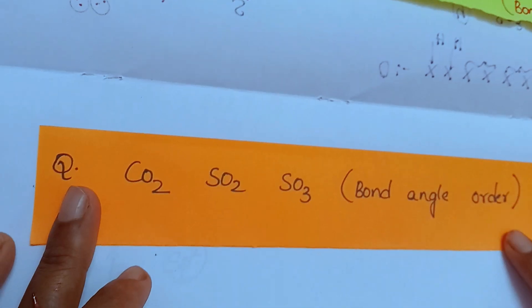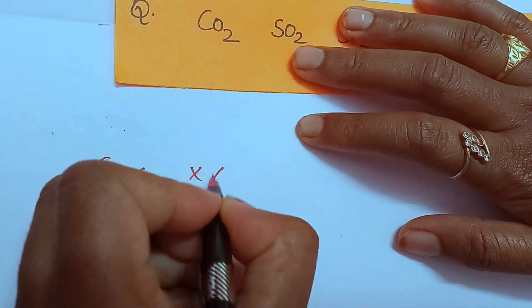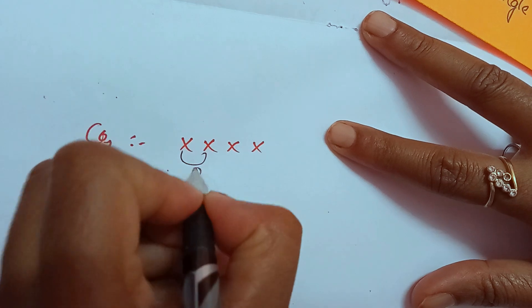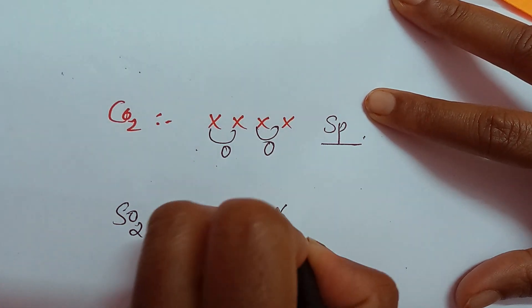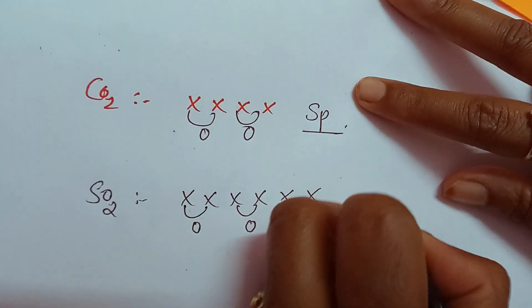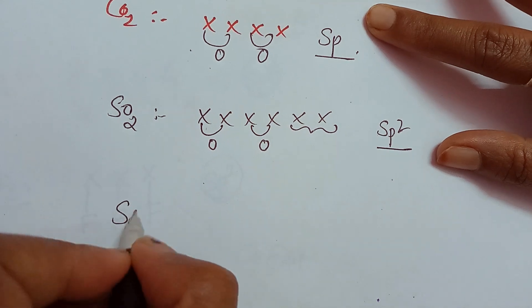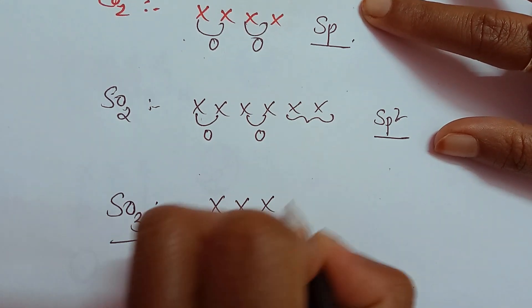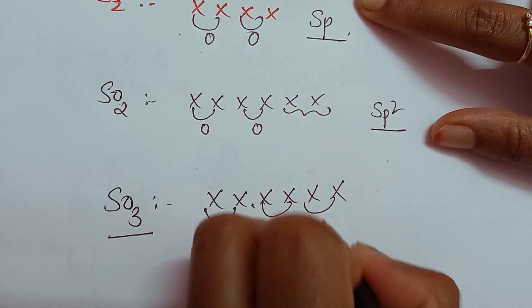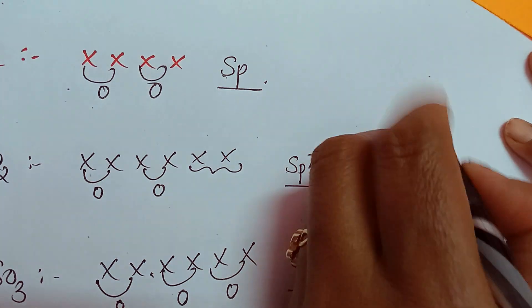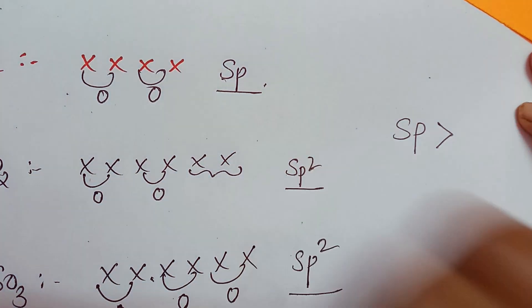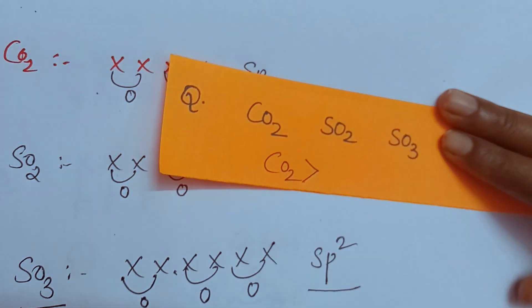Let's see the next example: CO2, SO2, SO3. Find hybridization. CO2 — carbon has 4 valence electrons, each oxygen forms 2 bonds, so hybridization is SP. SO2 — sulfur has 6 electrons, each oxygen forms 2 bonds, remaining electrons form a lone pair, hybridization is SP2. SO3 — sulfur has 6 electrons, each oxygen forms 2 bonds, total 3 bonds, hybridization is SP2. So the hybridizations are SP, SP2, and SP2.